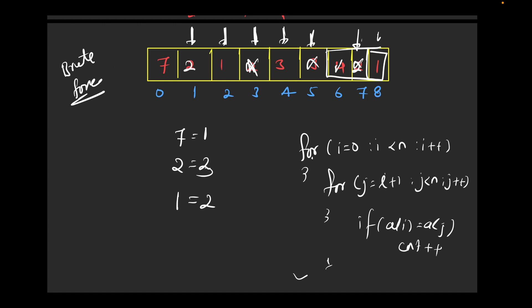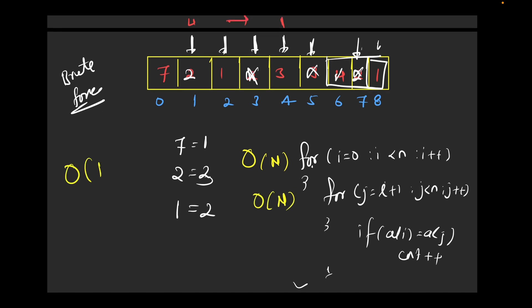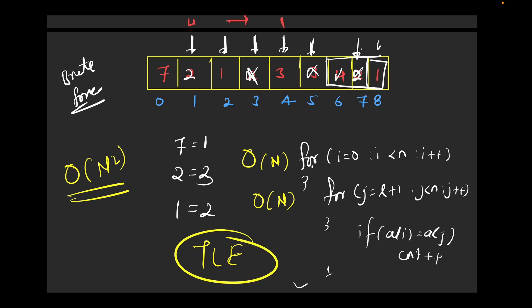The time complexity of this brute force solution is O(n) for the outer loop and O(n) for the inner loop, giving a total time complexity of O(n²). This will not be accepted — it will give a Time Limit Exceeded error because the code is not optimal enough.